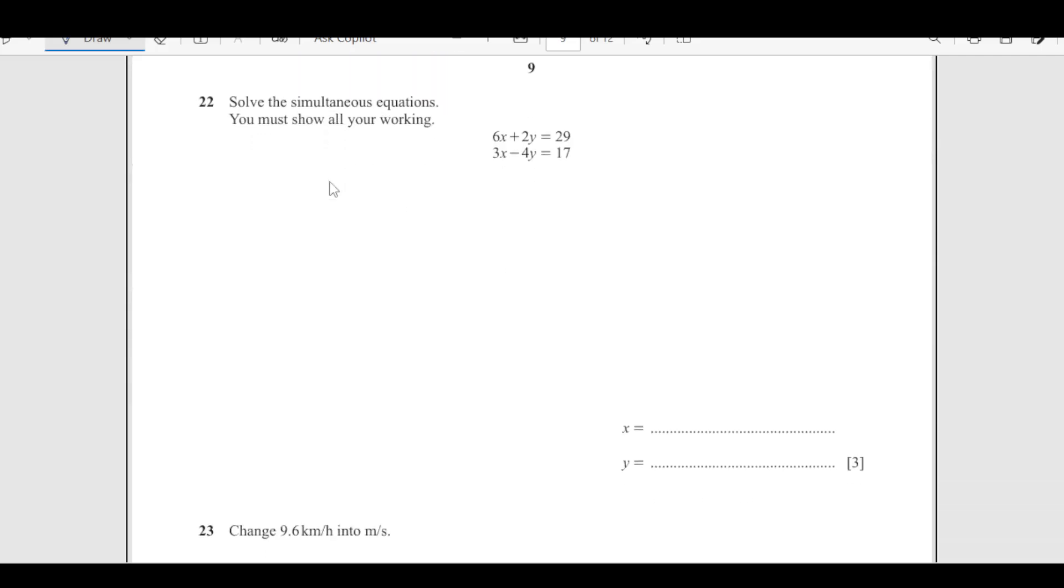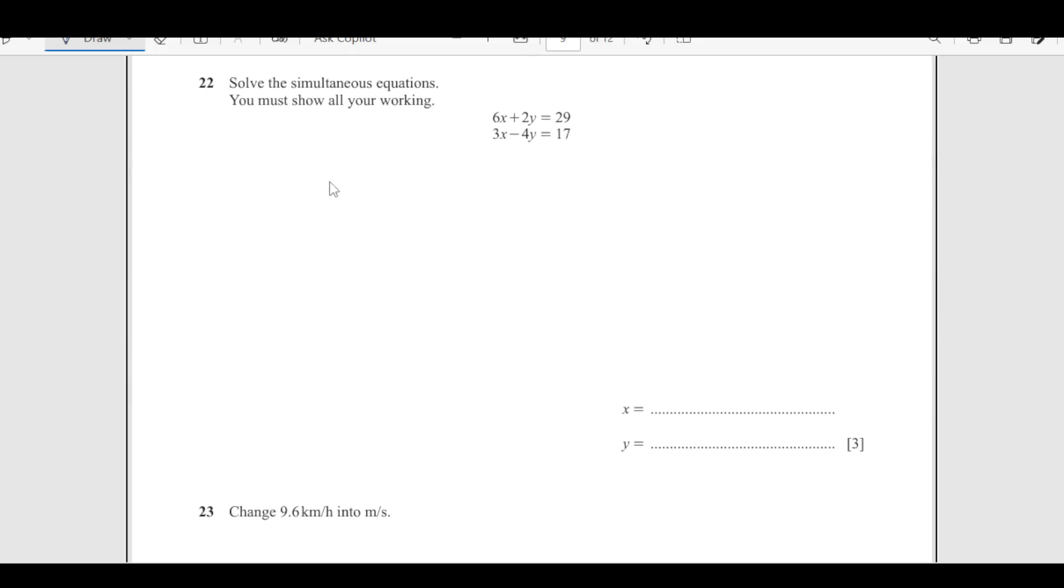Solve the simultaneous equations. You must show all your working. So to solve this, we are going to make the coefficient of either x or y same. So here it is easy to make of y. So I am multiplying this by 2. So I am rewriting 6 times 2, it is 12x plus 4y equals 29 times 2 is 58.